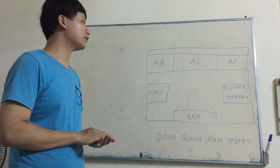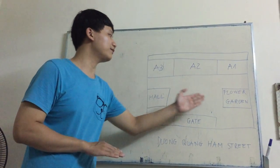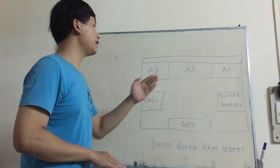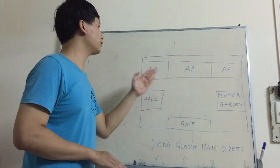After we see the hall and flower garden, we will see three buildings here. It's A1 building, A2 building, and A3 building.